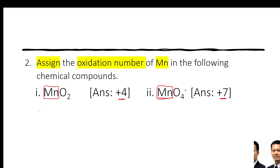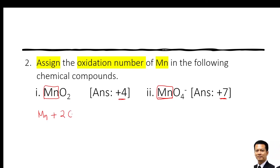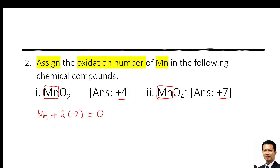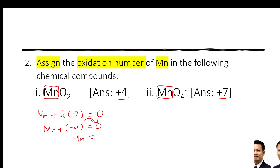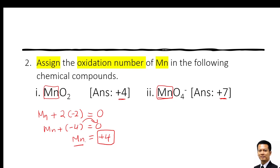For MnO₂: write Mn plus 2 times (−2) equals 0 (since the molecule is neutral). So Mn + (−4) = 0. Bringing −4 to the right gives Mn = +4. So the oxidation number for Mn in MnO₂ is +4.